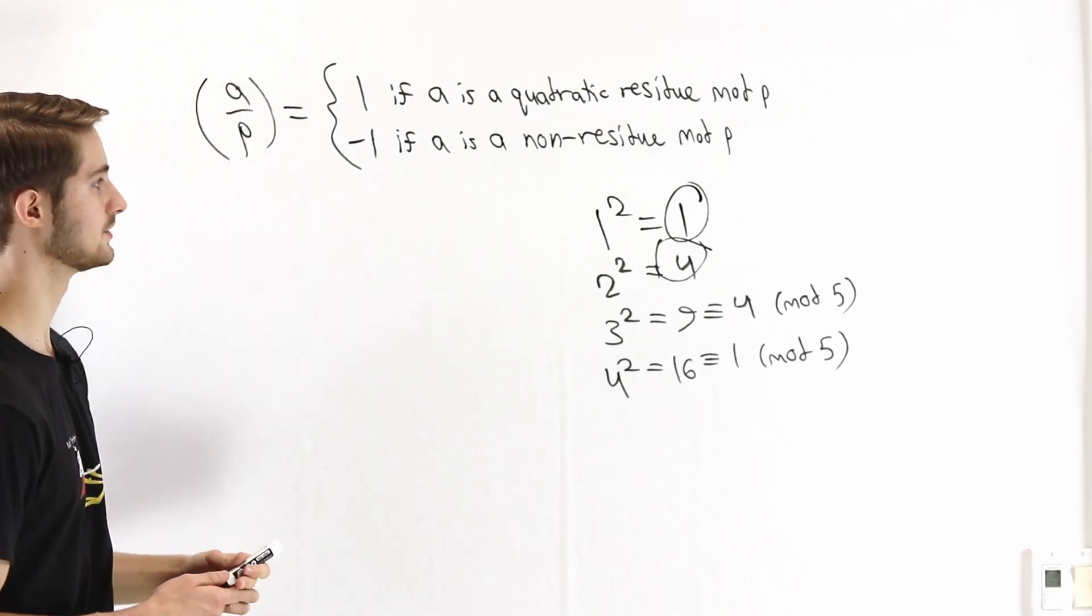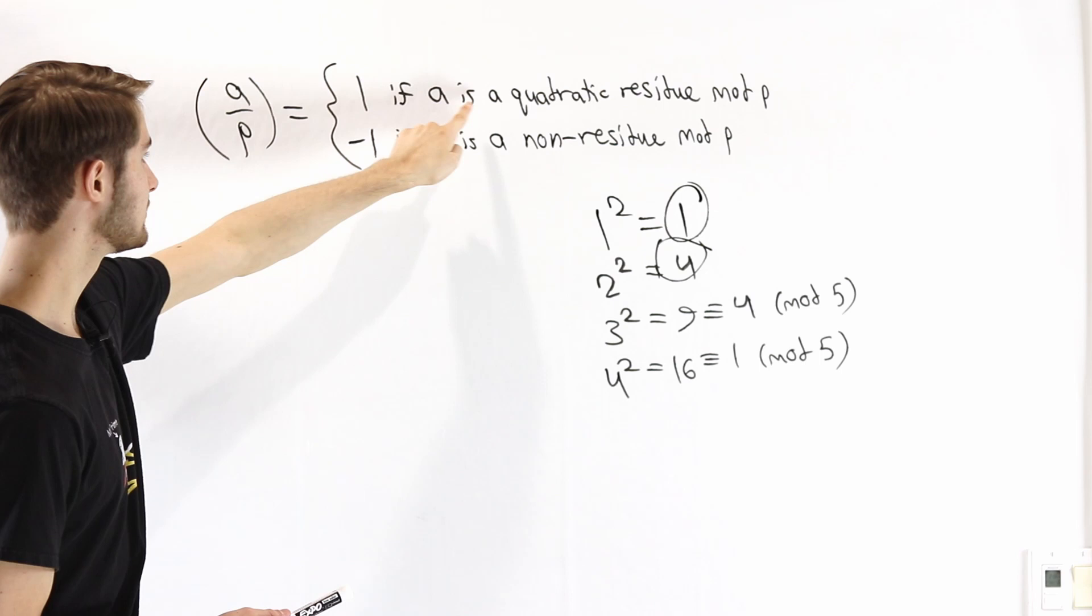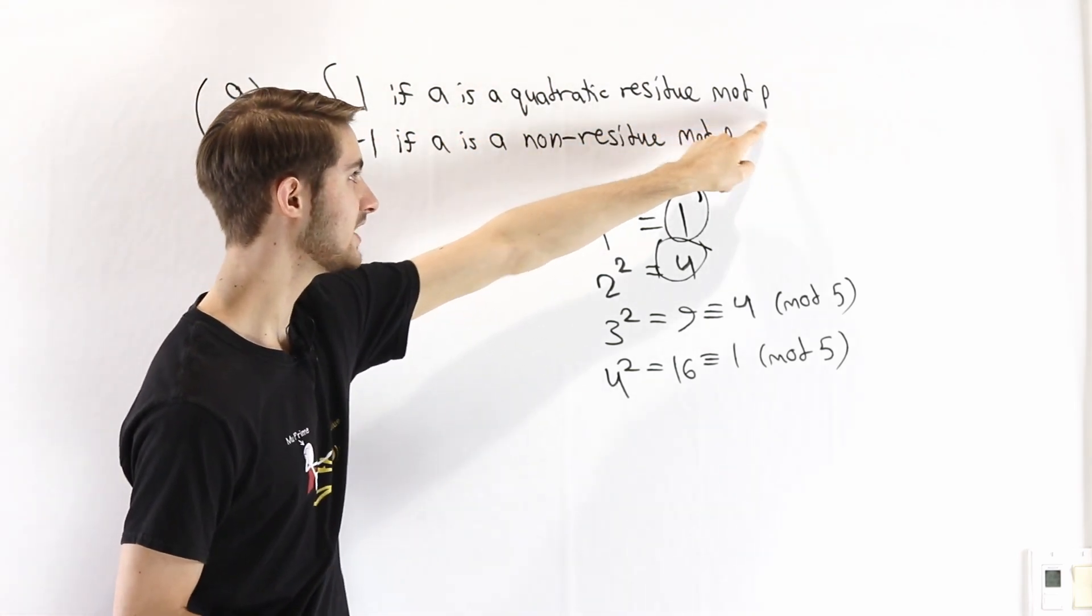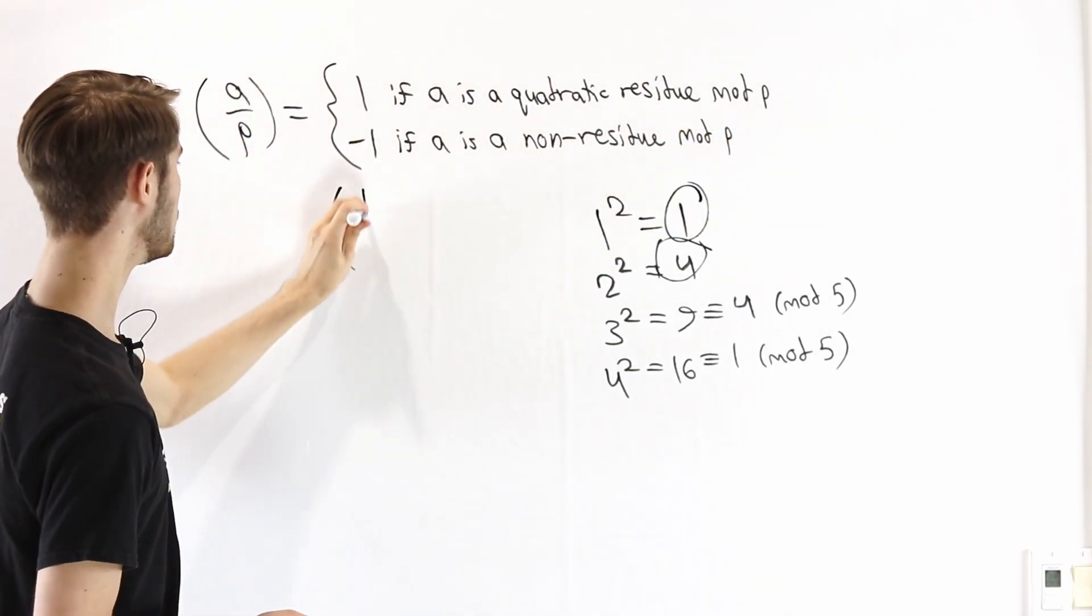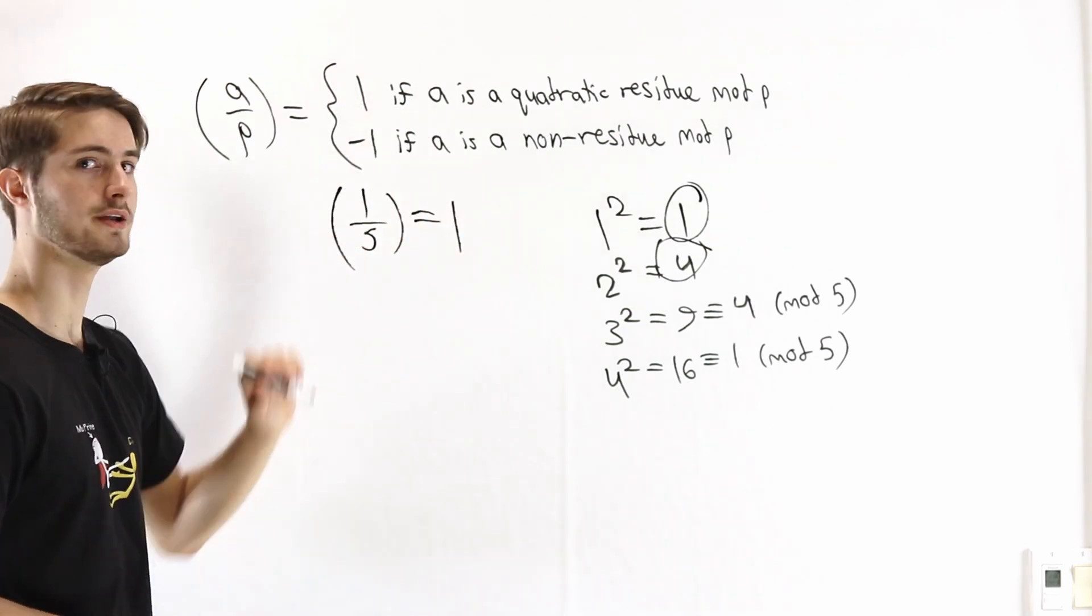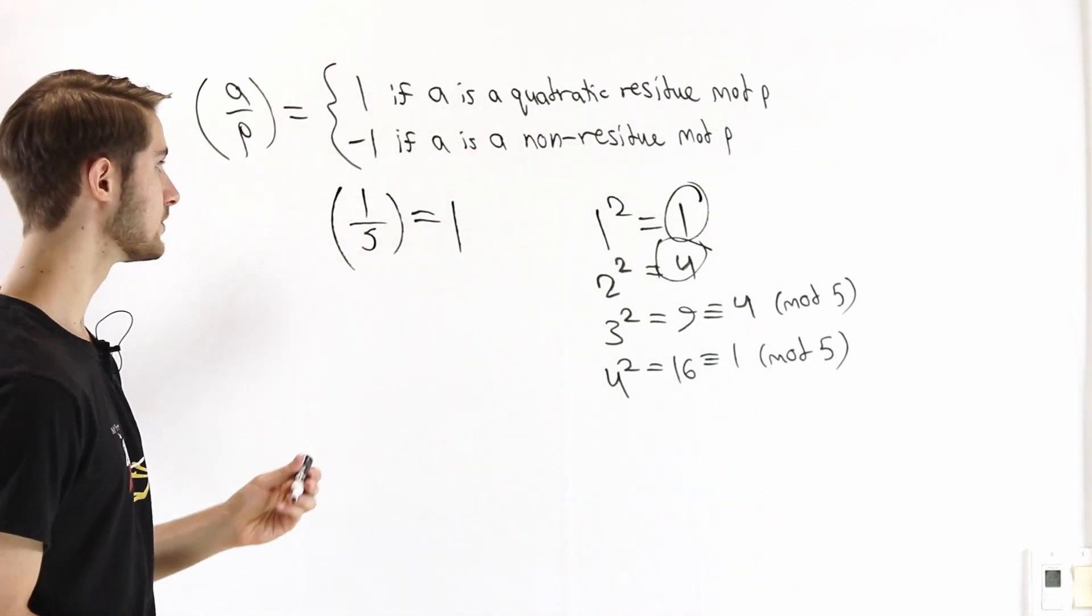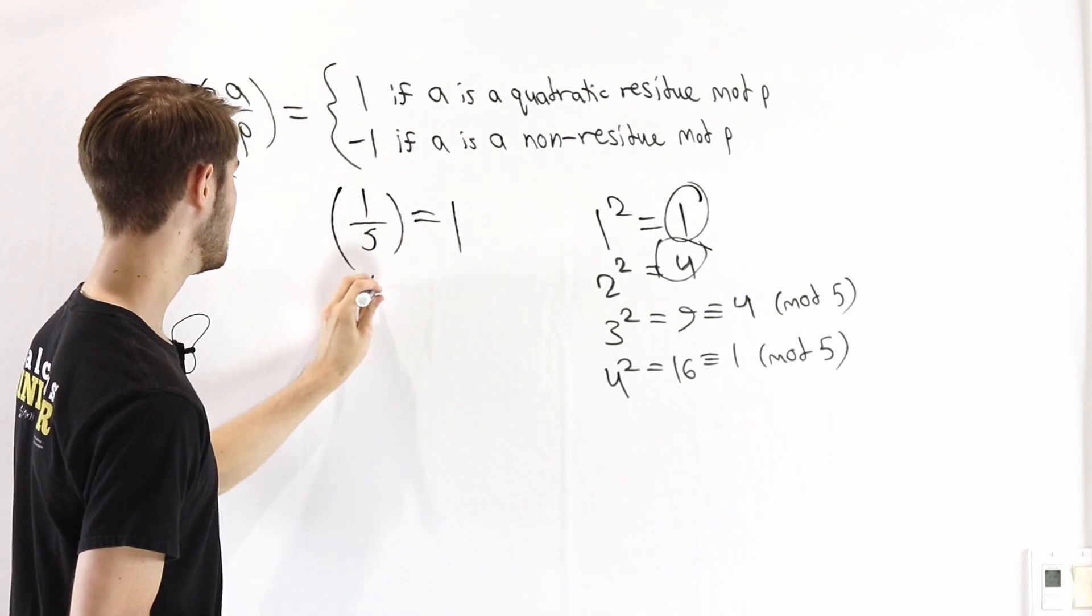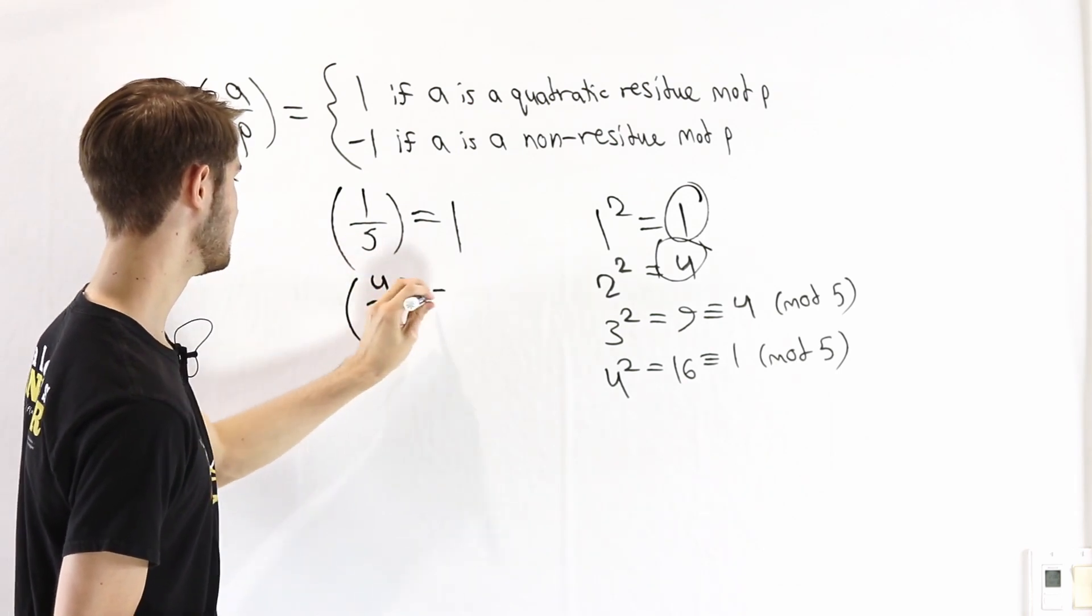Let's talk about that using the Legendre symbol. If 1 is a quadratic residue mod 5, that means that 1 on 5 is equal to 1. Similarly, since 4 is a quadratic residue mod 5, we know 4 on 5 is equal to 1.